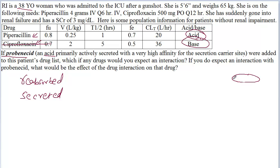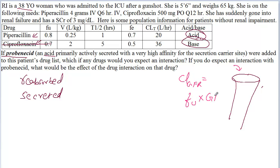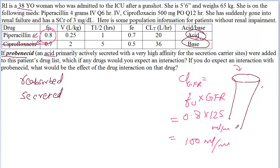Let's imagine this is the glomerulus. A drug is filtered — the clearance due to glomerular filtration is calculated by the formula: fraction unbound times glomerular filtration rate. The GFR is 125 ml per minute, and the fraction unbound for piperacillin is 0.8. So that equals approximately 100 ml per minute. The drug is filtered across the glomerulus at a rate of 100 ml per minute.